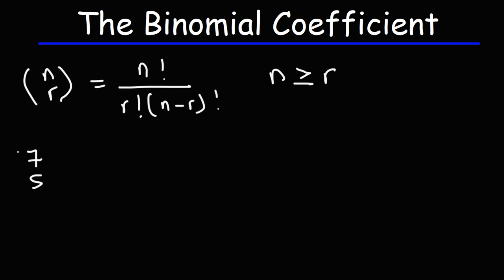Now let's move on to the next one. Let's say we have the binomial coefficient 7 above 5. What is that expression equal to? So n is 7, r is 5, and then we have n minus r factorial, or 7 minus 5 factorial.